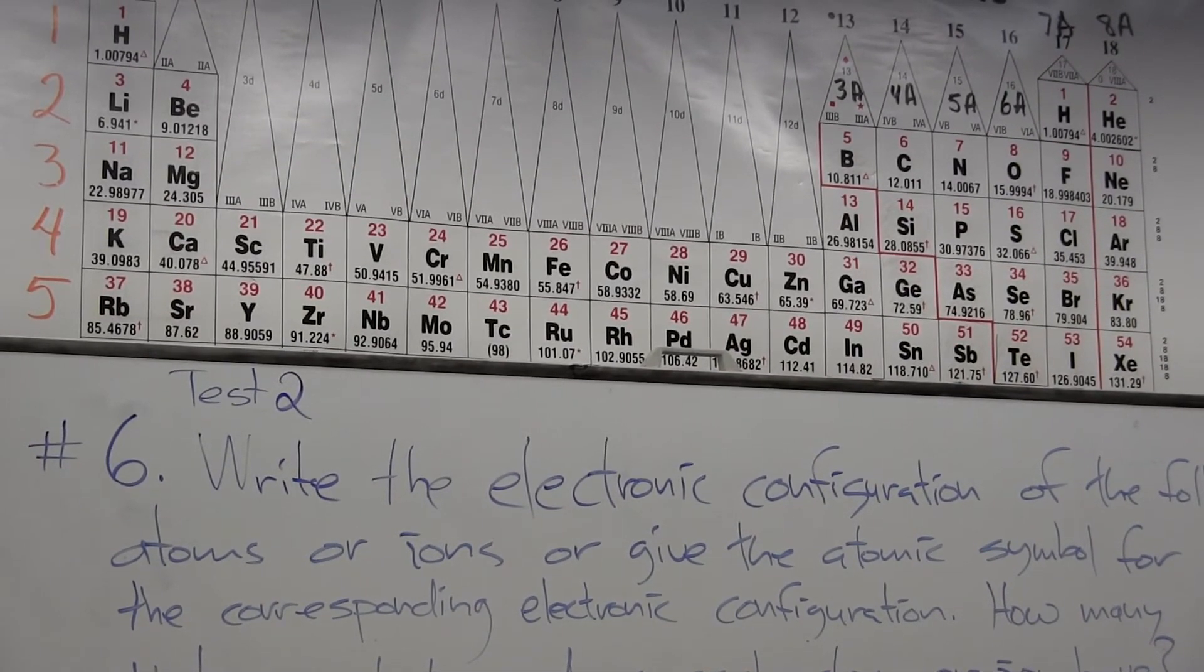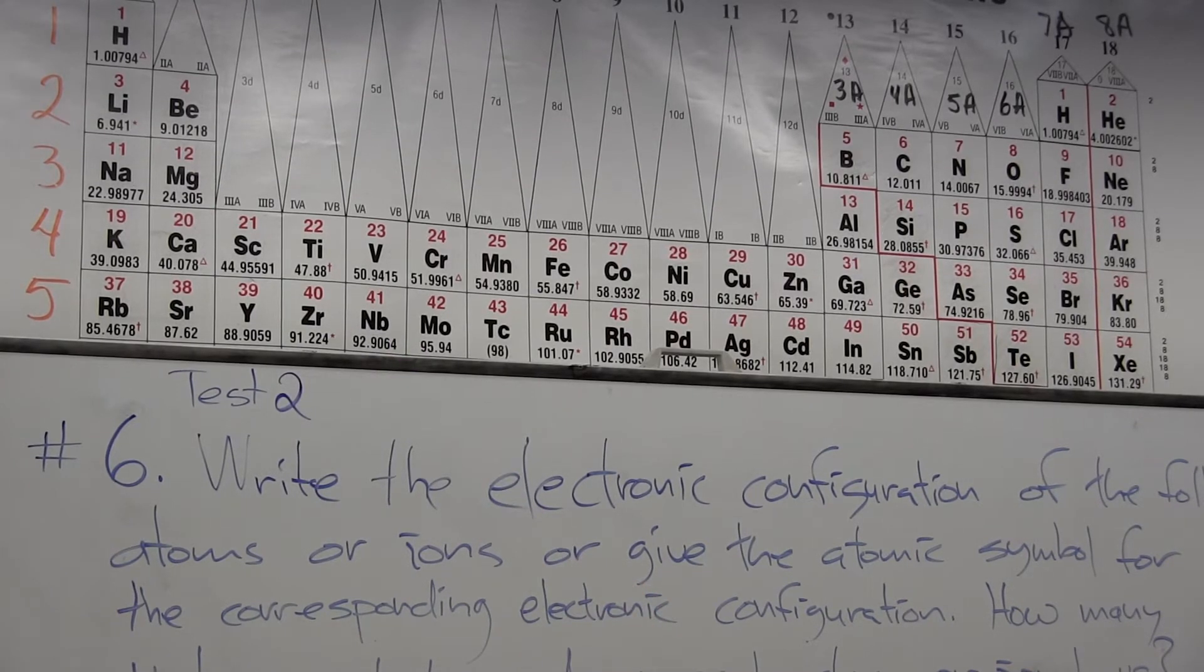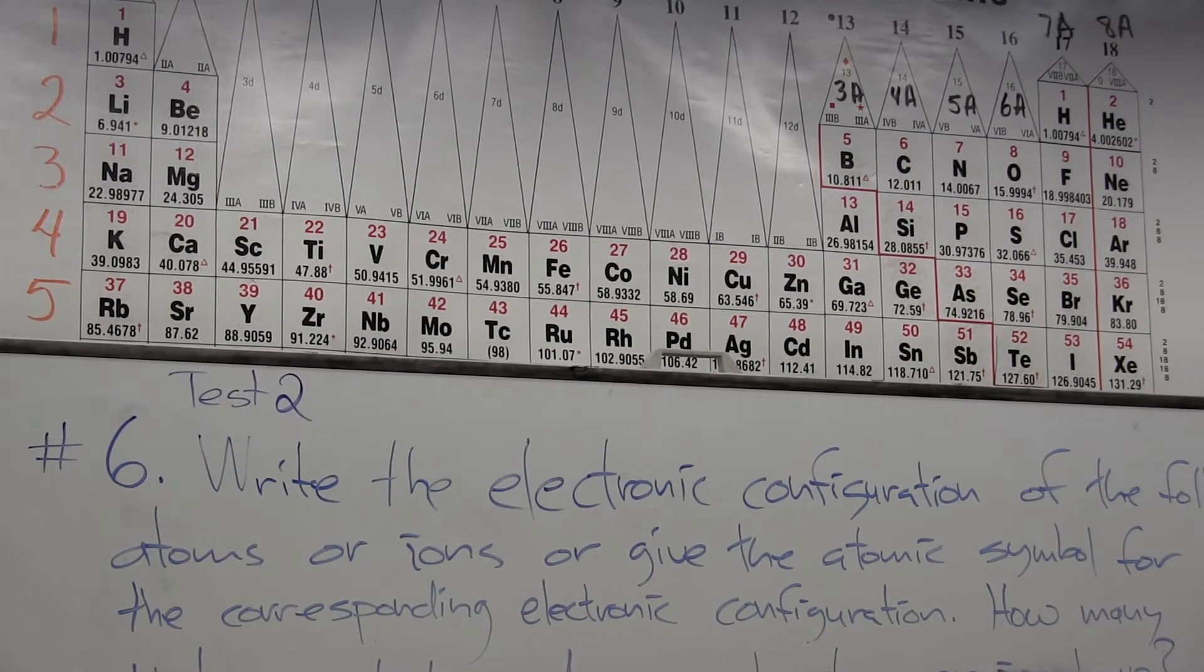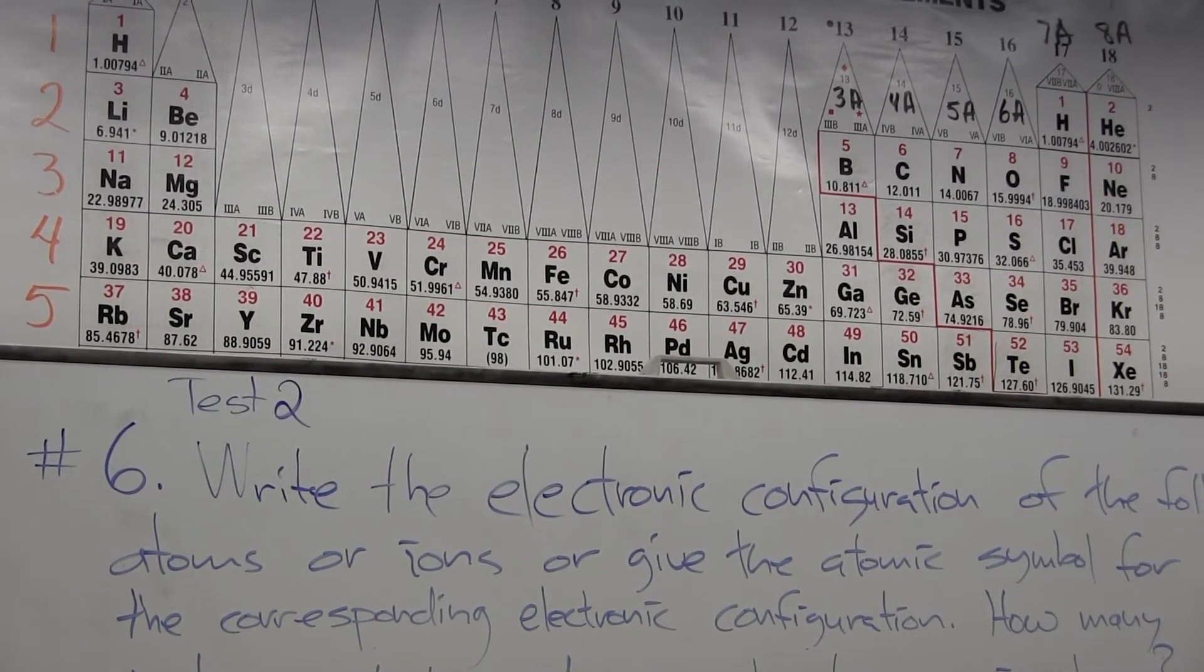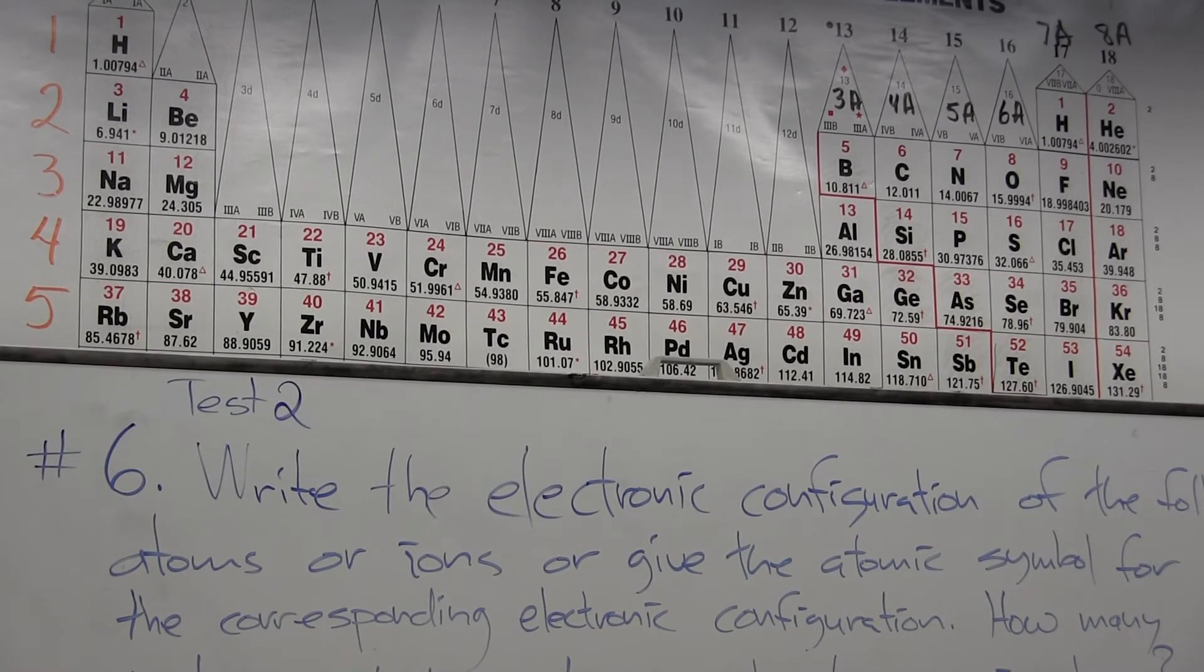Indeed, if I had the scandium neutral atom, it would be 4s2 3d1. But it turns out that the s electrons are going to be more easily removed than the d electron, which is a 3d electron.